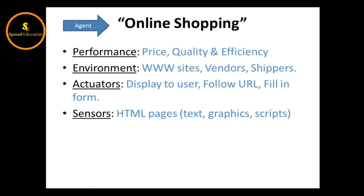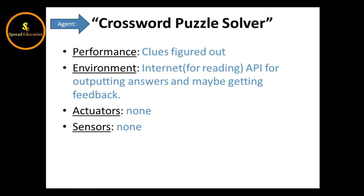Next example: an Online Shopping agent. The Performance measure includes price, quality, and efficiency. The Environment is www sites, vendors, and shippers. The Actuators are display to user, follow URL, and fill in forms. The Sensors are HTML pages, tags, and graphics.